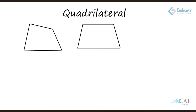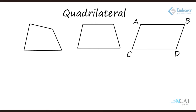Let's refine further — make the other two sides also parallel, so both pairs of opposite sides are parallel. This makes it a parallelogram. The key property: the moment both pairs of opposite sides are parallel, the opposite sides also become equal. And once the opposite sides are equal and parallel, the opposite angles also become equal. So angle A equals angle D, and angle B equals angle C.